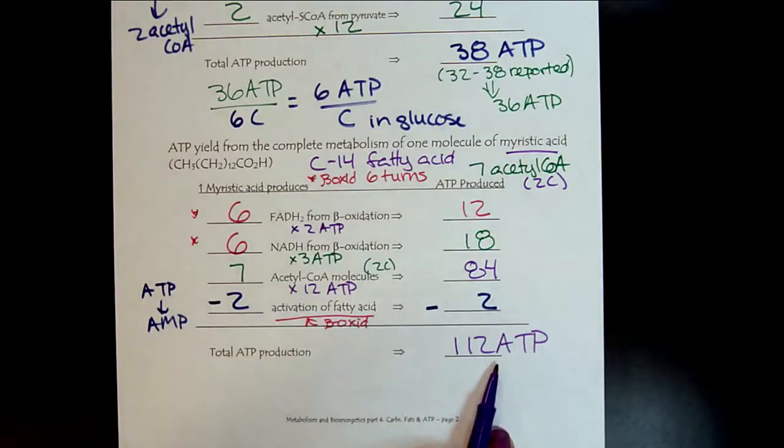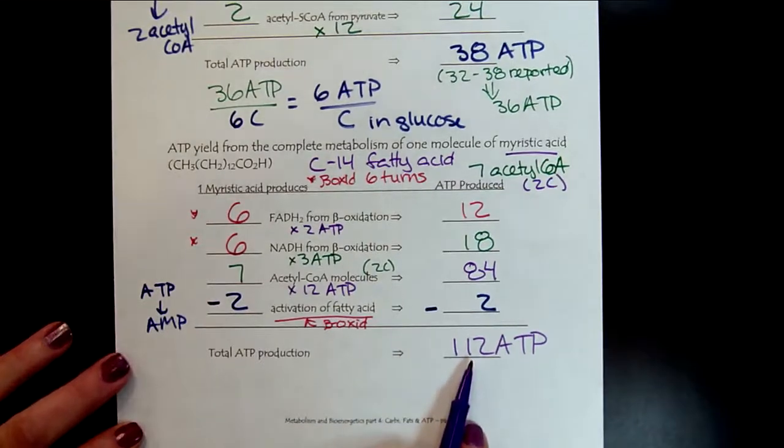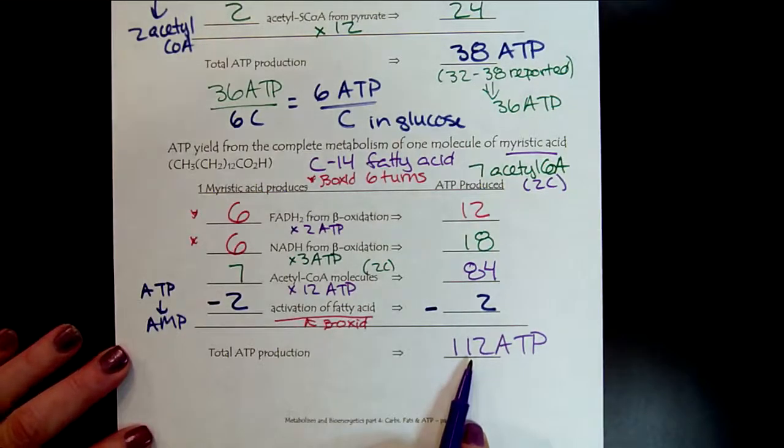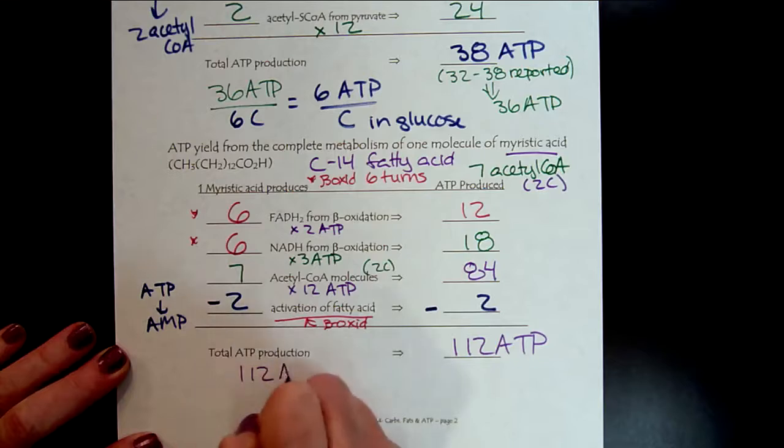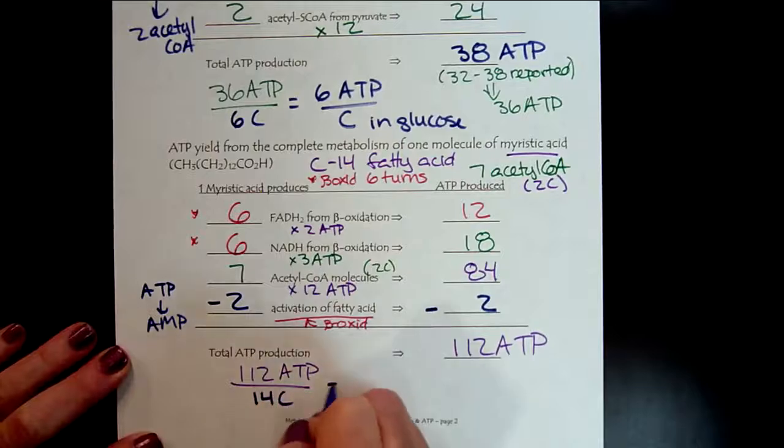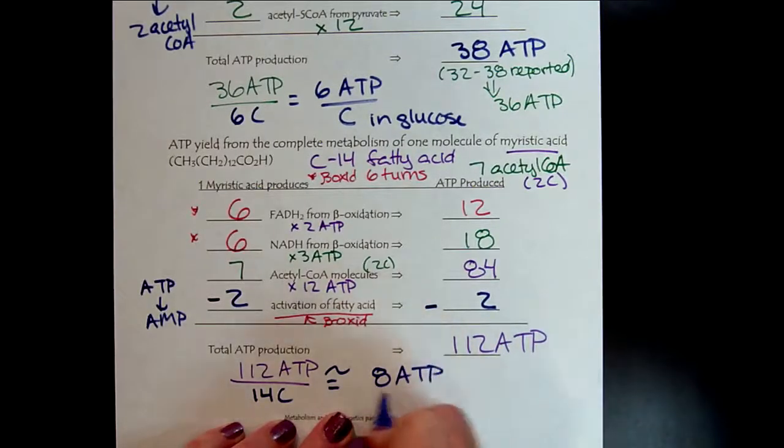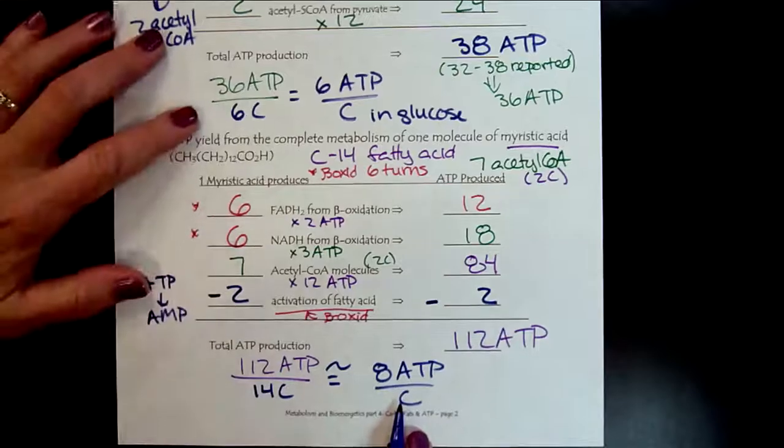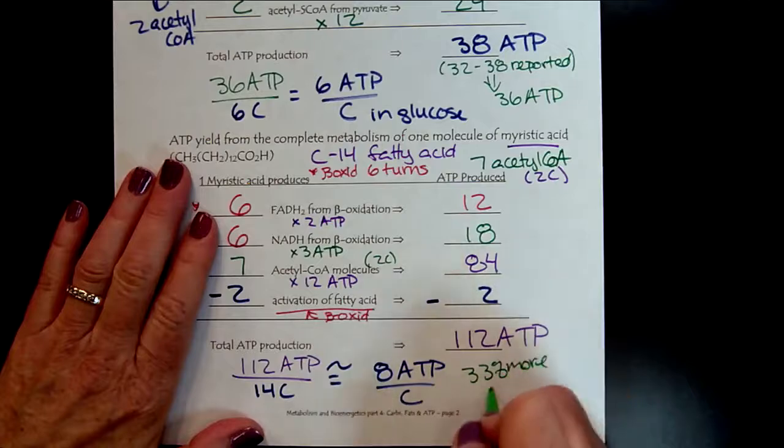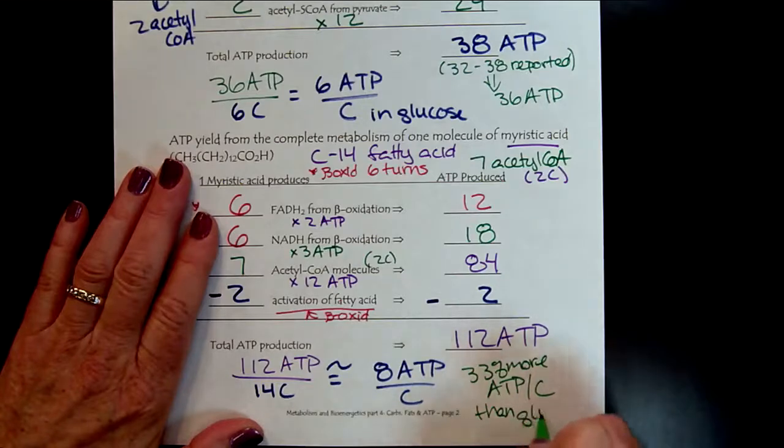So this could be a little misleading, though, because we started with a lot more carbons. So, yeah, fats are more, we get more calories from fats than we do carbohydrates, but we need to normalize this for the carbons. So we have 112 ATP, but initially we had 14 carbons. So when we do the math here, it basically goes to eight ATP per carbon, which is 33% more ATP per carbon than glucose.